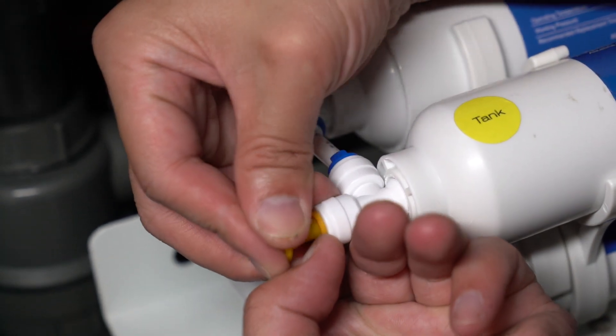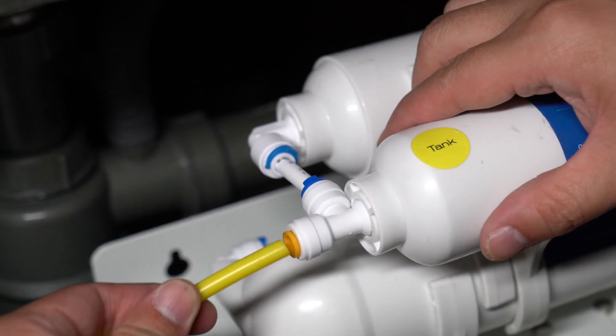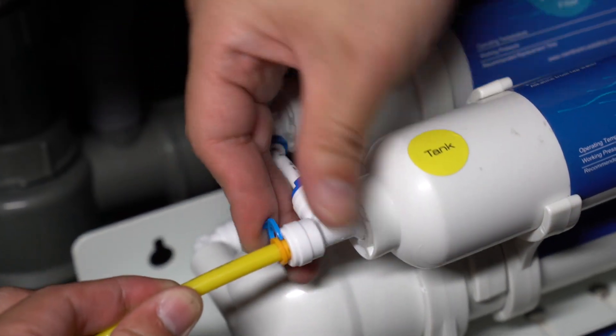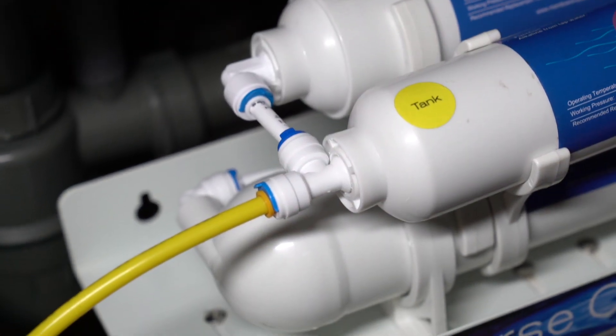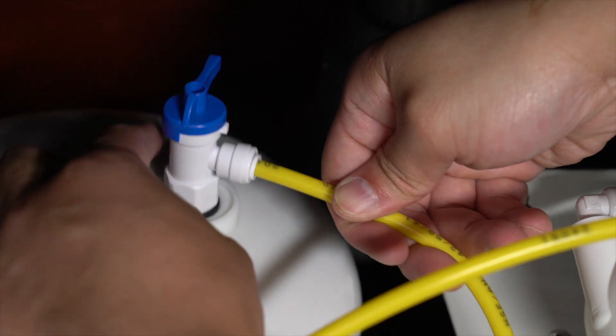Next, pull out the yellow plug and insert the yellow PE tube. Lock it with the blue locking clip. Now, insert the other side of the yellow tube into the pressure tank ball valve.